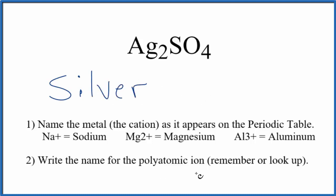Next we write the name for the polyatomic ion. This is the sulfate ion, one you should memorize. Lowercase s. So the name for Ag2SO4 is silver sulfate.